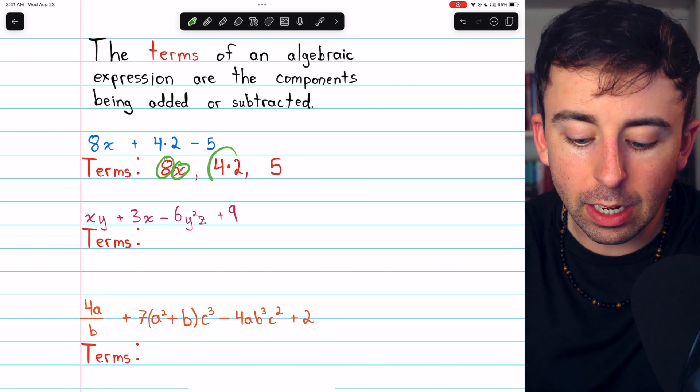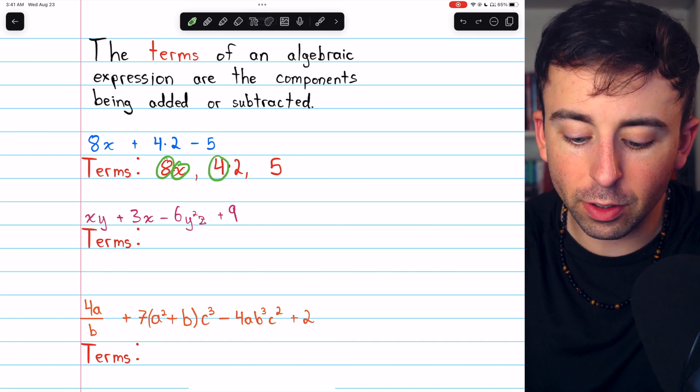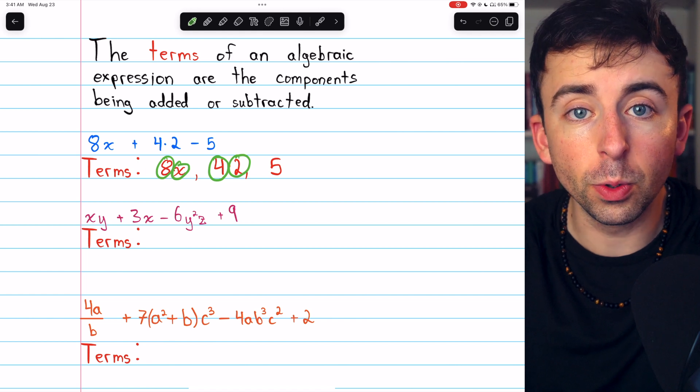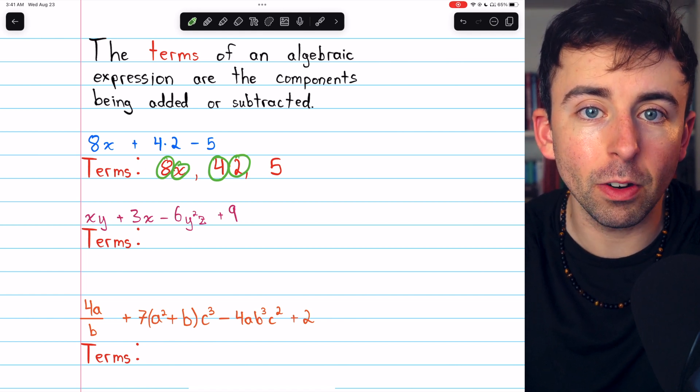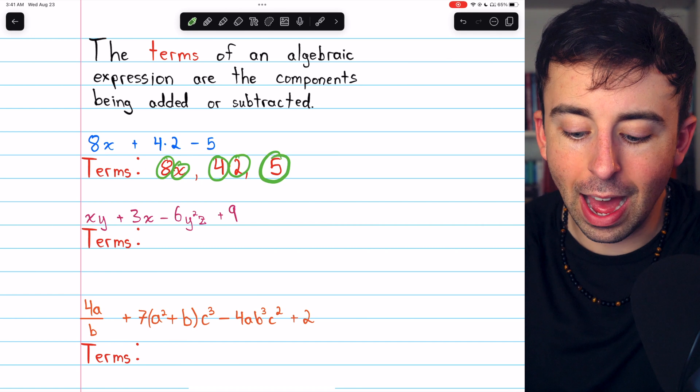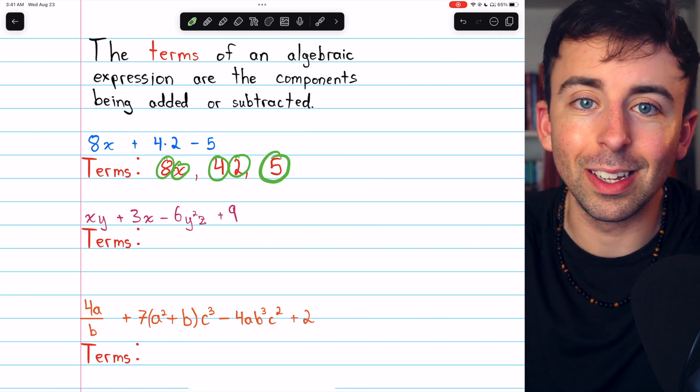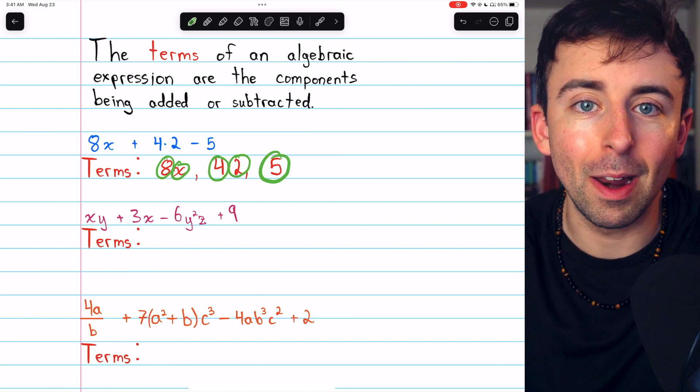On the other hand, in 4 times 2, the factors are 4 and 2 because those are the two things getting multiplied together. In the third term, 5, 5 is the only factor and it's not getting multiplied by anything.